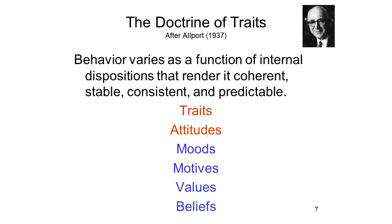Research like this exemplifies what's known as the doctrine of traits, a theoretical point of view derived to a great extent from the work of Gordon Allport, one of the early figures in scientific personality research. The doctrine simply says that social behavior varies as a function of internal dispositions, like traits, that render a person's behavior coherent, stable, consistent, and predictable. These dispositions are commonly studied in the form of traits and attitudes, but other personal dispositions are also relevant, such as the individual's moods, motives, values, and beliefs.